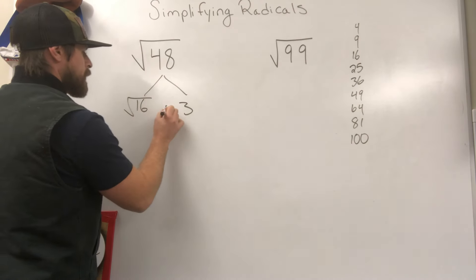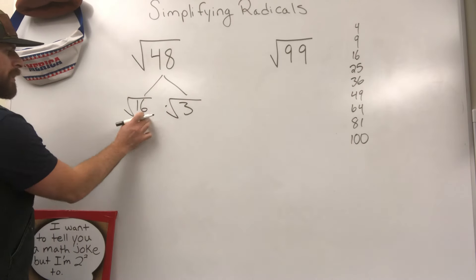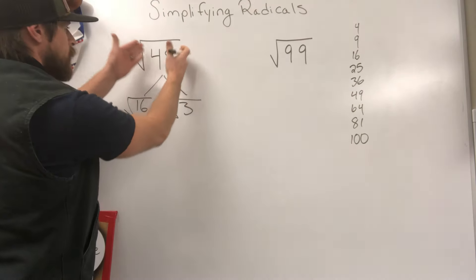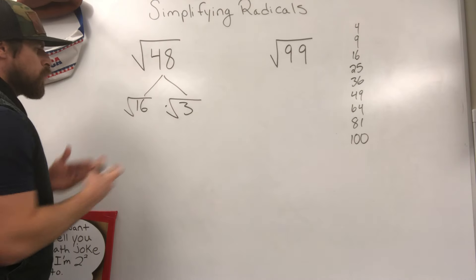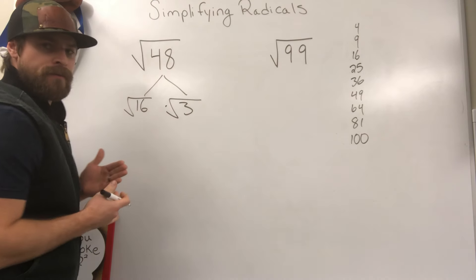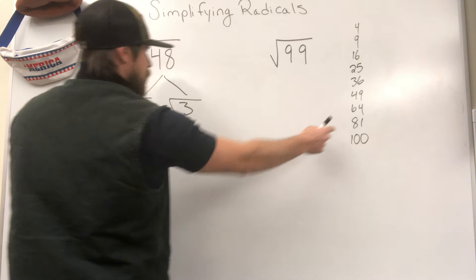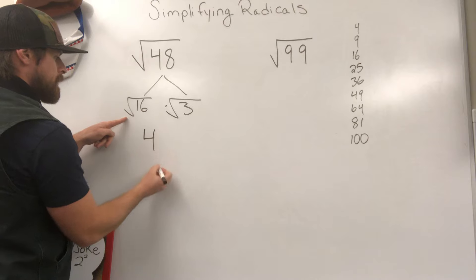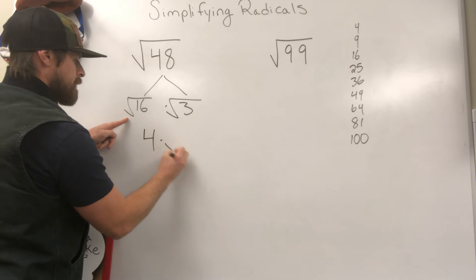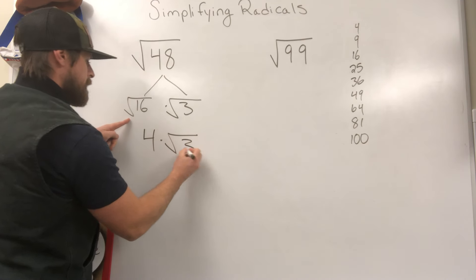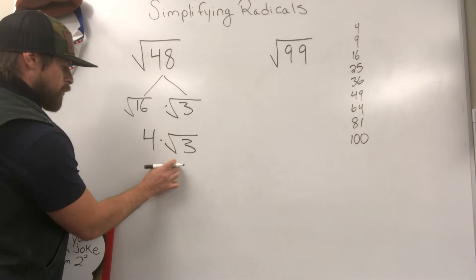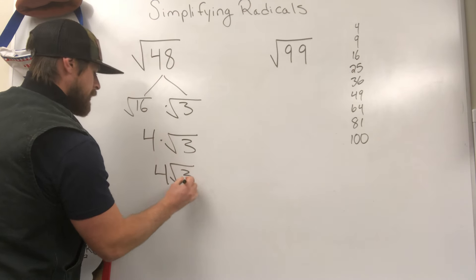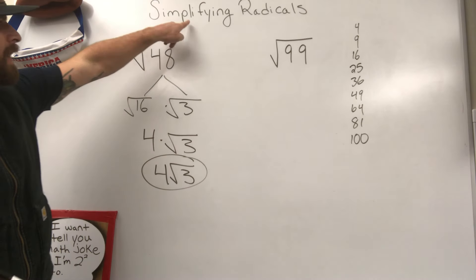What I need to do is put a square root around each one of those. Square root of 16 times the square root of 3, that is going to be equivalent to the square root of 48. So now which one of these can I actually simplify? And that's the one that's a perfect square. That's why we use this list. The square root of 16 is 4 times the square root of 3. So what we finish with is 4 root 3. And we now have a simplified radical.